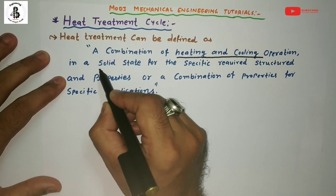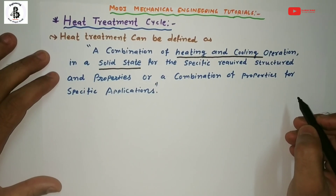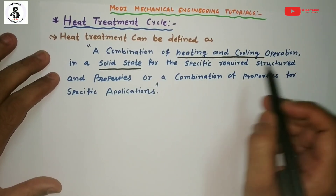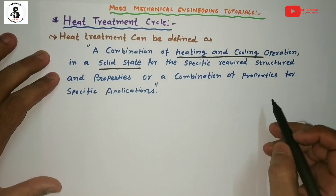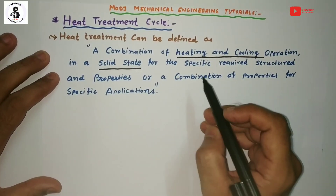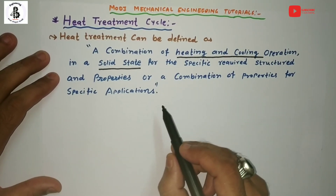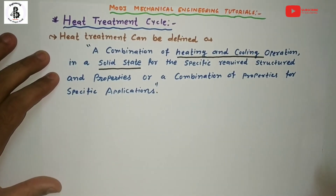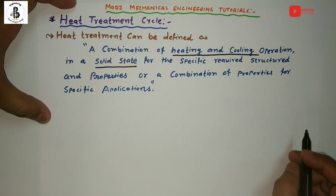That specific solid state — the hundred percent solid phase of the steel — is nothing but the austenite phase, which we have already discussed in the iron-carbon diagram for steel. In the solid state, we achieve a specific required structure and properties, or a combination of properties, for specific applications. By controlling the heating and cooling operations as per my requirements, I get the mechanical properties I need. In simple terms, the heat treatment process is a combination of heating and cooling, and all basic heat treatment processes involve the transformation or decomposition of austenite.